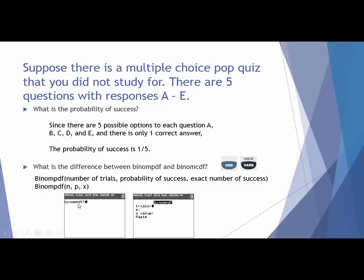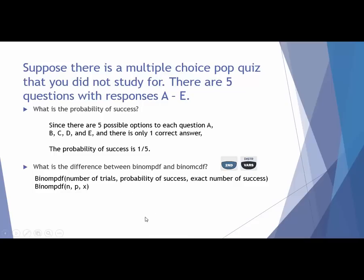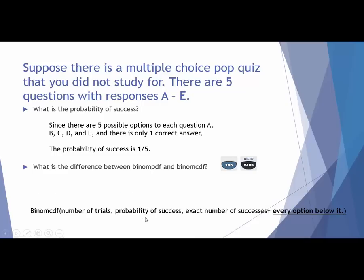If you have the old operating system on the left, you would see what your screen looks like. On the right, if you have the new operating system, you would see what your screen looks like after pressing second and distributions. For both, you enter N, which represents your number of trials; P, your probability of success; and X, the exact number of successes you're interested in finding.